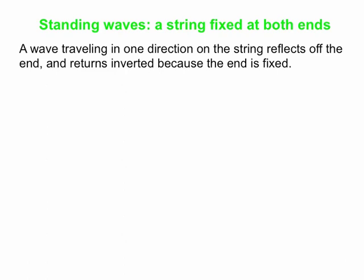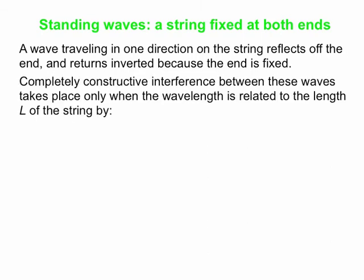When you have a wave going one direction on the string, reflecting off the fixed end, it returns upside down. And then these waves interfere with each other. You can get really good constructive interference only when the wavelength has a special relationship with the length of the string. When you get an integer number of half-wavelengths exactly fitting in the length of the string, then you get some neat things happening — lots of perfectly constructive interference.